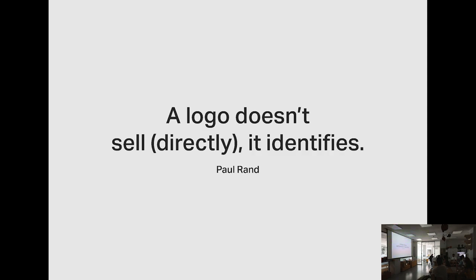The most important thing to work on first is the logo. The logo will be everywhere — social media, products, letterhead, cards, everywhere. It's the single most important thing for your company and one of the most difficult things to design, because in a simple icon or typography you have to implement all the concepts of the company. The famous designer Paul Rand said 'The logo doesn't sell directly, it identifies.' The most important thing in branding is consistency and repetition — when you see the thing so many times it's embedded in your brain.